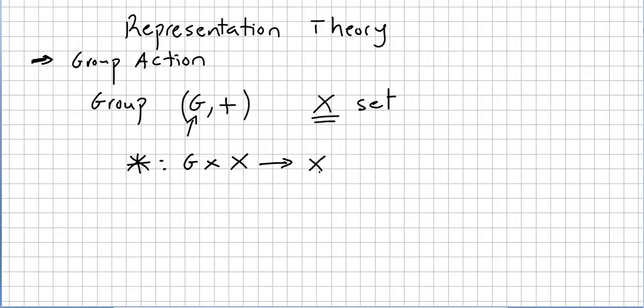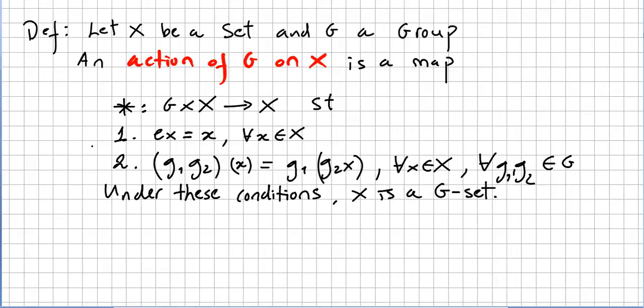So for this operation we will write it like this GX or we can also write G star X or simply GX. Okay so G will be an element from the group G and X will be an element from the set X. Okay we dive directly into the definition.